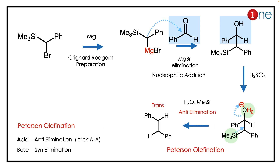The answer lies in the Peterson olefination — it's an important, stereoselective reaction. In the first step, we are adding magnesium, so Grignard reagent formation occurs. You have the anion which acts as a nucleophile, which attacks the carbonyl group, forming a new C-C bond.